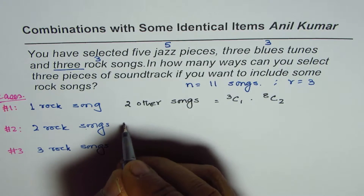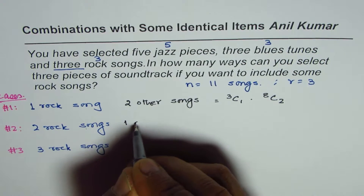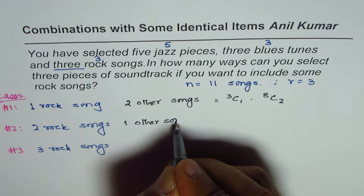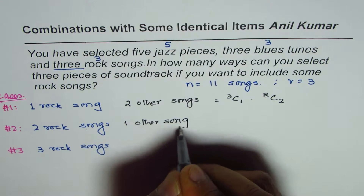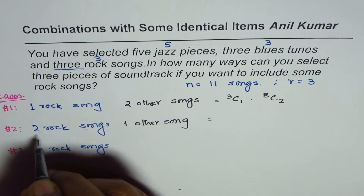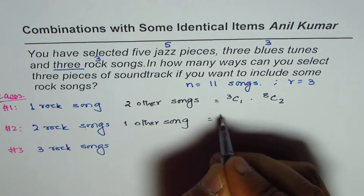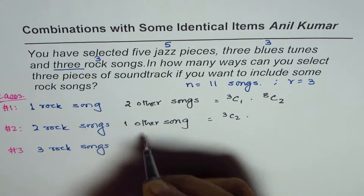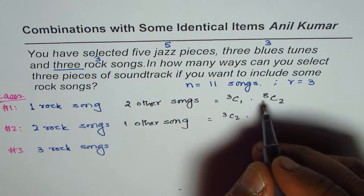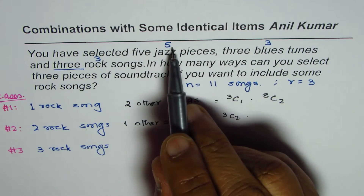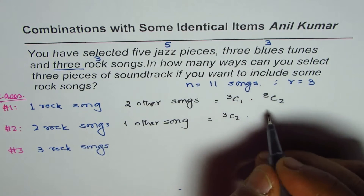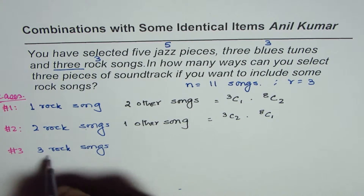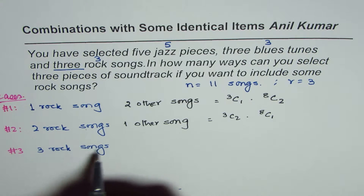For Case 2, two rock songs and one other song — other meaning not rock. Two out of three is 3C2, times one other song. One other song is from the eight remaining (five jazz plus three blues), so it is 8C1.